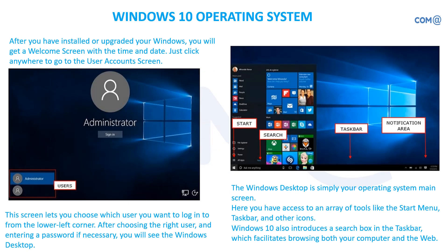Once you have installed the operating system and log into the computer, the first screen requires your user ID and password. You can also change the user if you are not the right user. During installation you would have set a username and password — remember those here. You also set secret questions; if you forget your password, it will prompt for the secret question answer, otherwise you will not be allowed to log in.